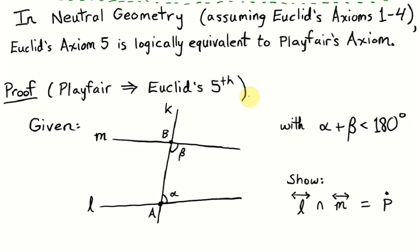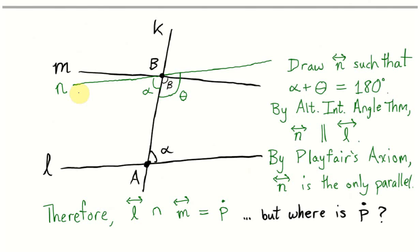For the first part of this proof, we'll begin by assuming Playfair's axiom is true, and we'll prove Euclid's fifth axiom. In other words, we're given the two lines L and M, a transversal that goes through them, and the two angles on one side sum to less than 180 degrees. Our task is to show that these two lines intersect at a point P on this side.